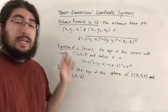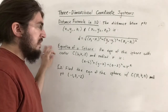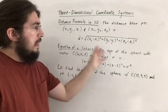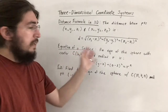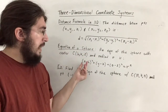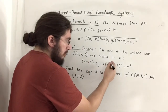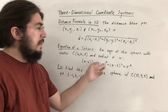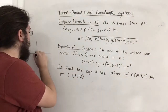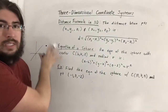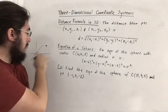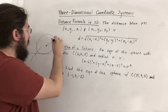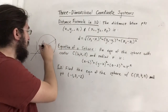We now have the equation of a sphere, which is directly related to the distance formula. An equation of a sphere with center (h, k, l) and radius r is: (x − h)² + (y − k)² + (z − l)² = r². The reason this is true is that if (h, k, l) is the center and you go a distance r in each direction, you end up getting a sphere. This represents all points on the surface of the sphere that have the same distance r from the center.